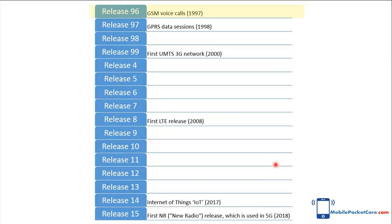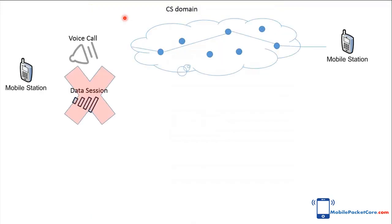In 1997, 3GPP introduced Release 96 of the standards. In this release, the GSM technology existed. GSM had only a CS domain that handled voice calls, while it didn't support data sessions.